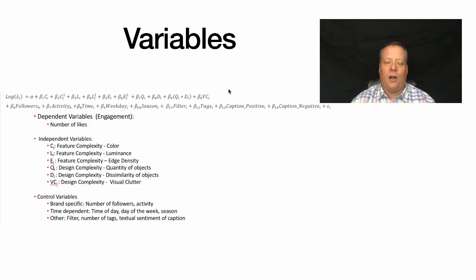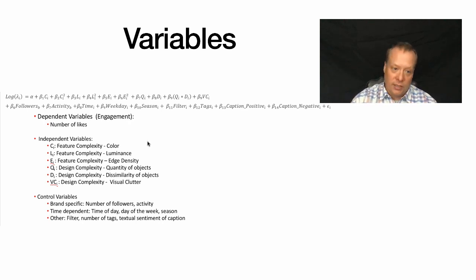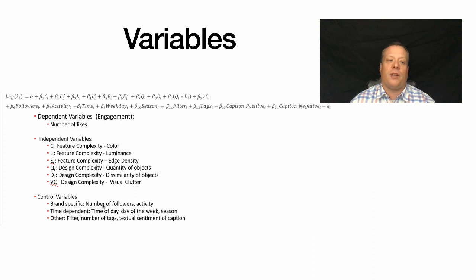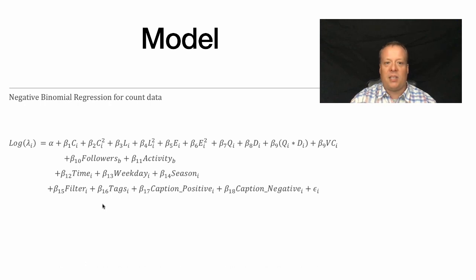We took all those features and numbers and built a model to predict the number of likes of an image based on all these aspects — feature complexity aspects like color, luminance, and edge density; design complexity including quantity of objects, dissimilarity of objects, and visual clutter; and brand-specific variables like number of followers and time of day. Number of followers is an important control because bigger brands may have different policies in terms of effort put into designing their Instagram images.